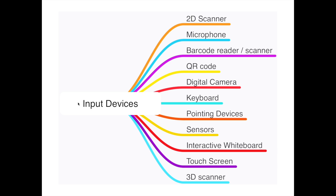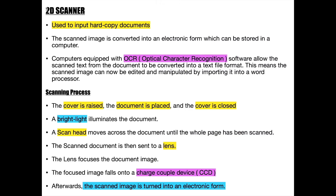The first input device we will go through is the 2D scanner. The 2D scanner is used to input hardcopy documents. The scanned image is converted into an electronic form which can be stored in a computer. Computers equipped with OCR software allow the scanned text from the document to be converted into a text file format. The scanning process of the 2D scanner is simple and very easy to perform and understand.